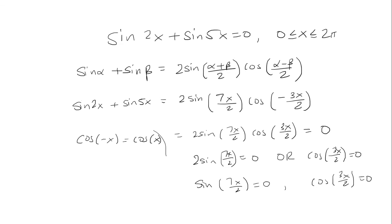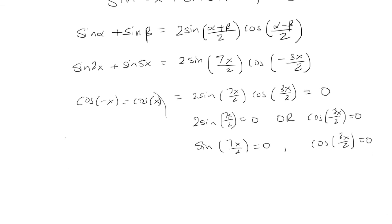So in general, sine is equal to 0 at 0, at pi, 2 pi, 3 pi, etc. The coefficient here is 7 over 2. 7 over 2 is 3 and a half. That means we have to go around the circle 3 and a half times.